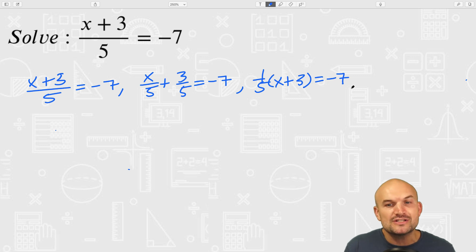I'm going to rewrite the fraction a little bit differently. Instead of writing it as x over 5, I'm just going to rewrite it as one-fifth x plus three-fifths equals negative 7.